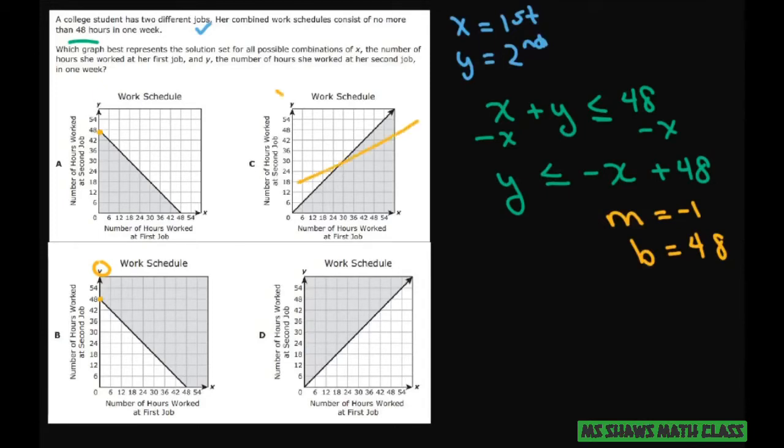Y intercept these two. These two do not follow that. So I'll just cross those out. Now we have to see if we're going to shade up or down.